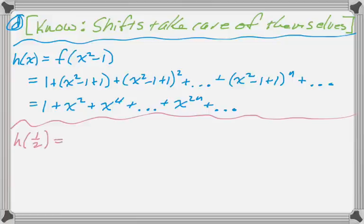So now I need to find h of 1 and 1 half. So h of 1 and 1 half, as I mentioned, this is a geometric series, so that's going to be the first term over 1 minus the common ratio. And I can simplify that to 4 thirds.